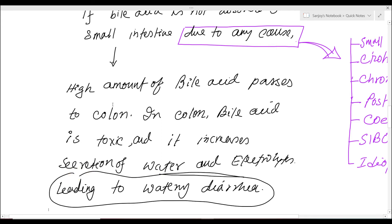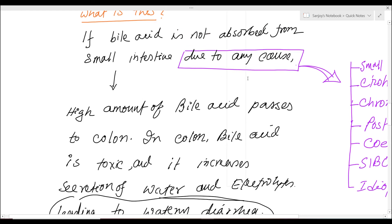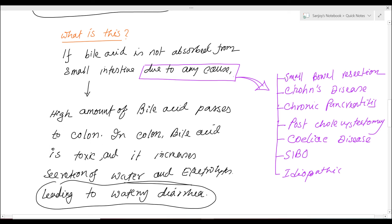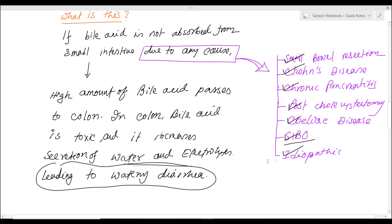If bile salt is not absorbed from the small intestine due to any cause, a higher amount passes to the colon, where bile acid is toxic and increases the secretion of water and electrolytes, leading to watery diarrhea. The important causes of decreased bile acid absorption include small bowel resection, Crohn's disease, chronic pancreatitis, post-cholecystectomy, celiac disease, small intestinal bacterial overgrowth, and sometimes it may occur as idiopathic.